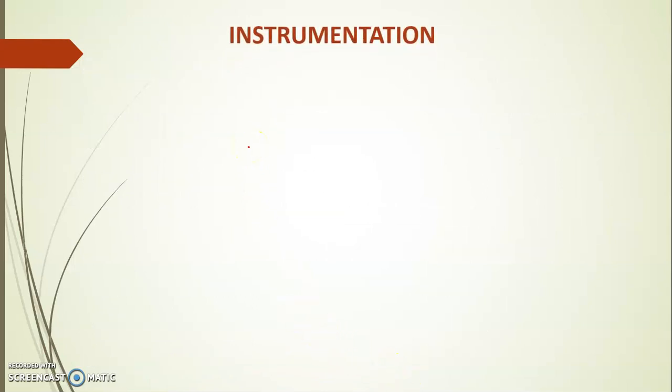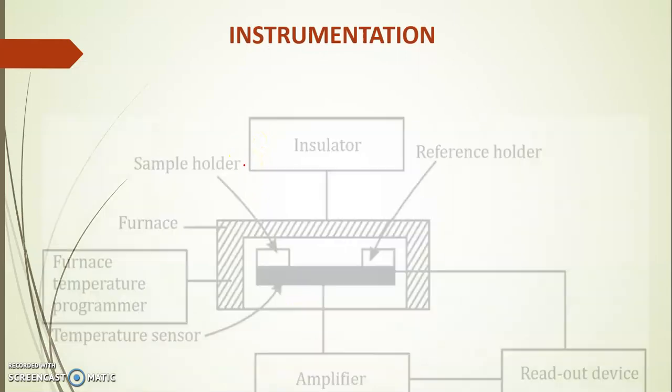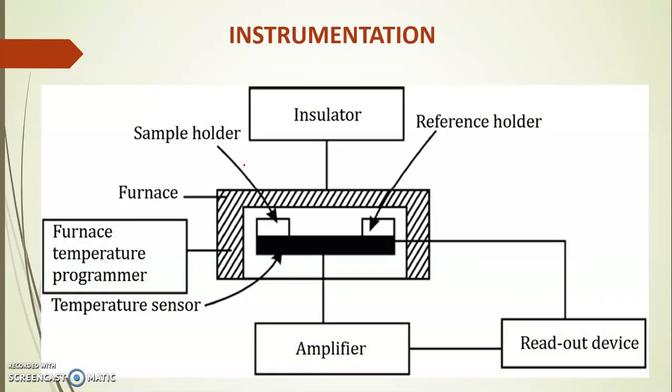Let us see the instrumentation involved in this method. As per TGA, here also the same instrument, a thermobalance, is used for the DTA method. Here is the furnace. In the furnace, sample holder and reference holder are present. This is the main difference between TGA method and DTA method. In TGA method, only sample holder is present, but in DTA instrument, there is sample holder as well as reference holder.